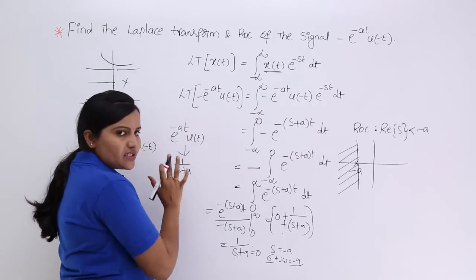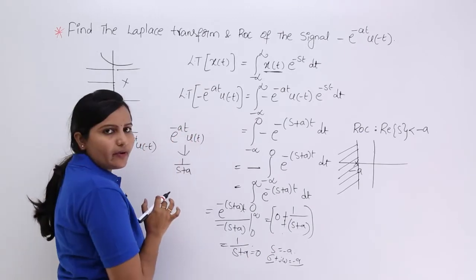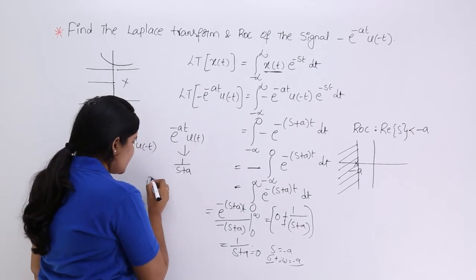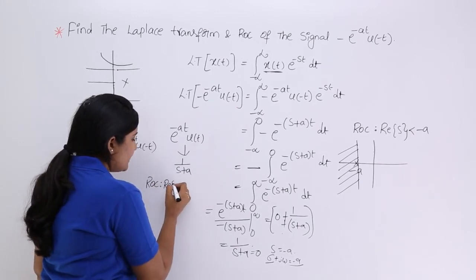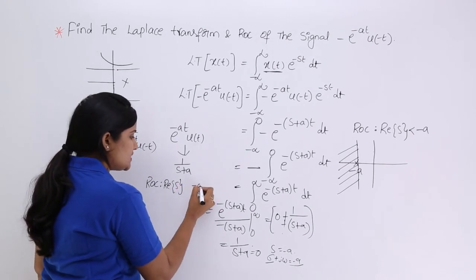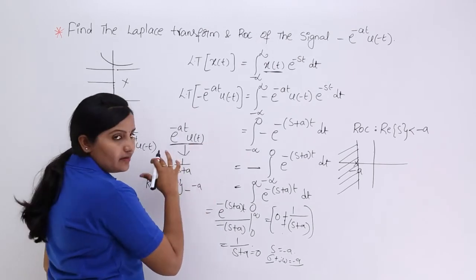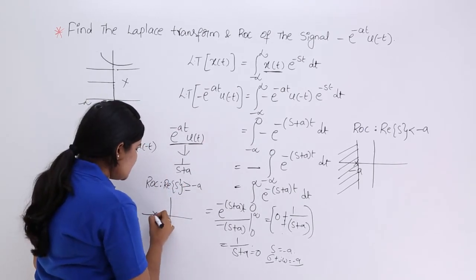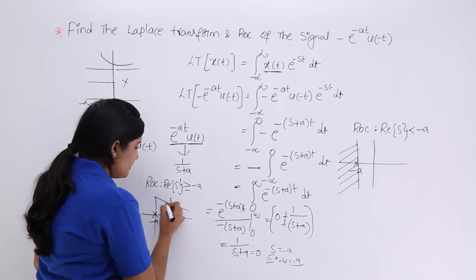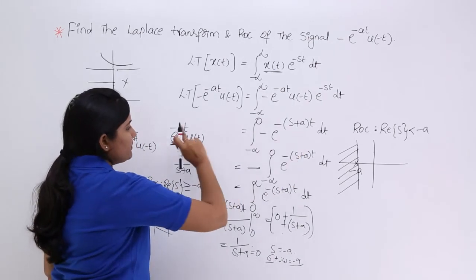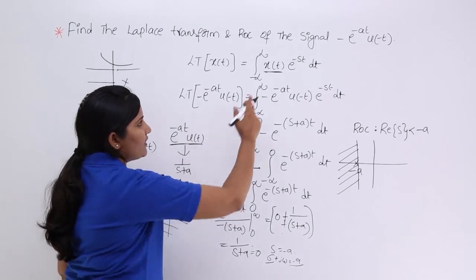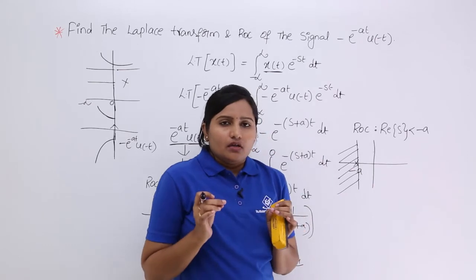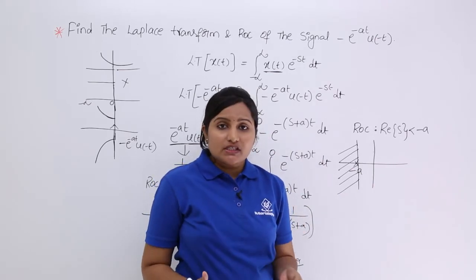In the previous video, for e power minus at u(t), we also got the transform 1 by (s plus a) and the real part of s equal to minus a. But since e power minus at u(t) is a right-sided signal, the ROC is real of s greater than minus a. You can clearly see the difference in ROCs between e power minus at u(t) and minus e power minus at u(minus t) — the transforms are equal but the ROCs are different.